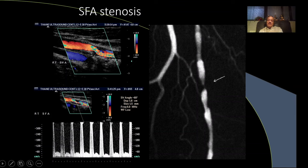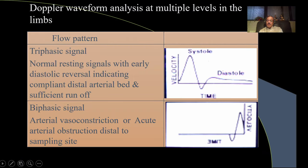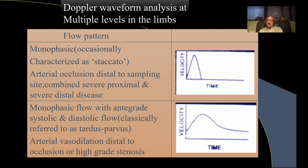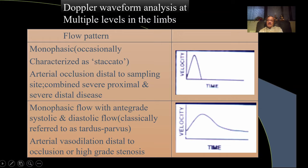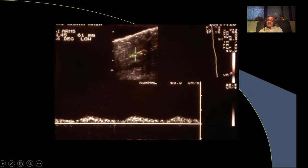Normally we have a triphasic waveform. If it becomes biphasic instead of multiphasic, this means there is arterial vasoconstriction or an obstruction distal to the sampling site. If it becomes monophasic, there is arterial occlusion distal to the sampling site, or this can happen with combined proximal and severe arterial disease. If it is monophasic tardus parvus — with increased time to reach peak systole — we know there has been a proximal stenosis or occlusion.